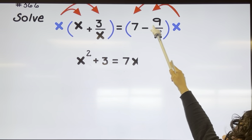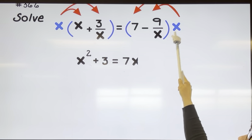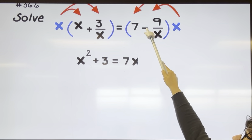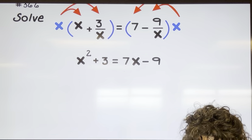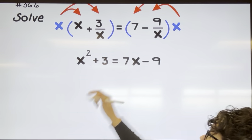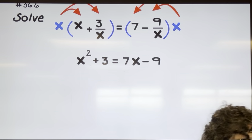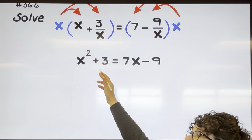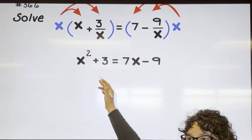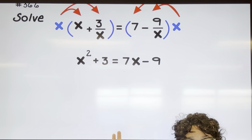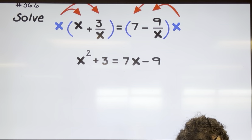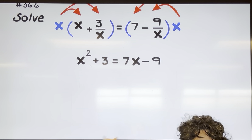Then X multiplied by negative nine over X — the X's cancel — and I'm left with negative nine. All of my fractions are gone and I'm left with something that's quadratic: X to the second power. So I'm going to move all the terms to the same side and factor this one, not use the quadratic formula.